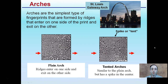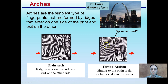Starting with the most basic one: arches. You can think of the St. Louis Gateway arch. Arches are the simplest type of fingerprints, formed by ridges that enter one side of the print and exit the other. A plain arch has just a little bit of a rise. The tented arch is similar to a plain arch, but it has a spike in the center — a little more pronounced. Both types are shown here — plain arches and tented arches.